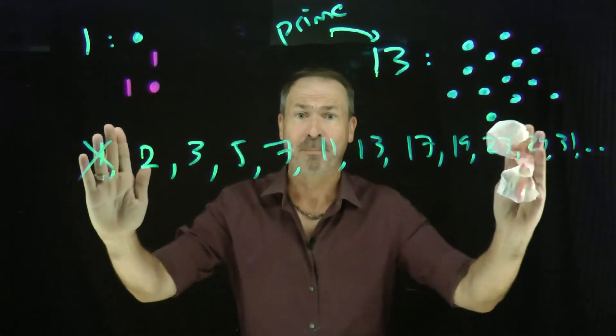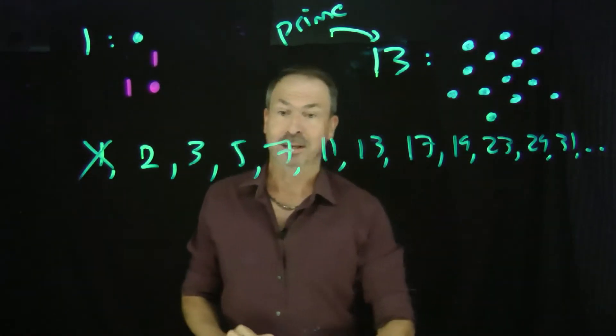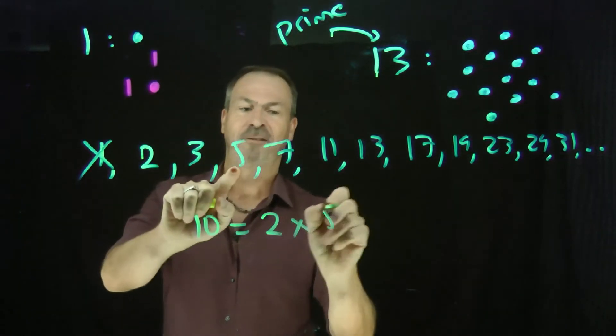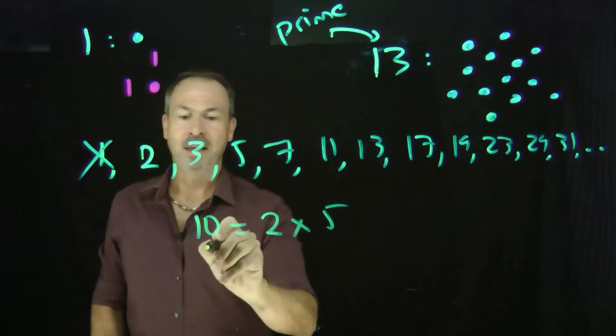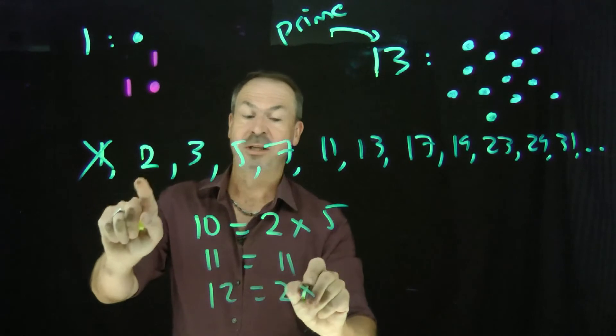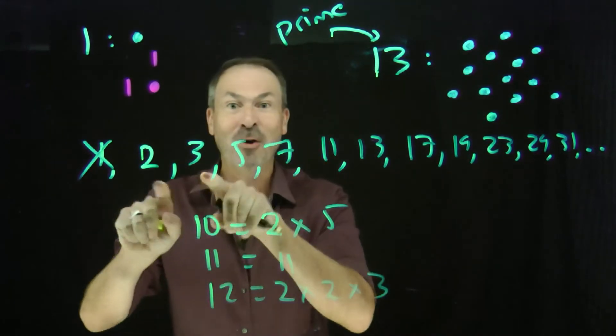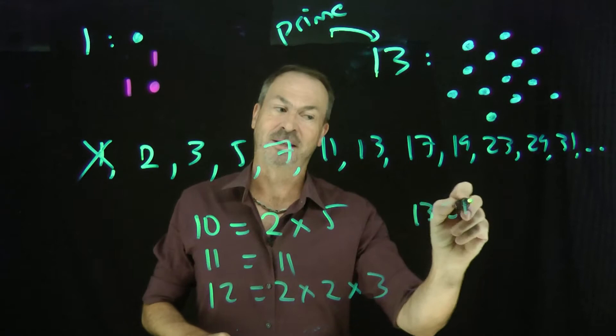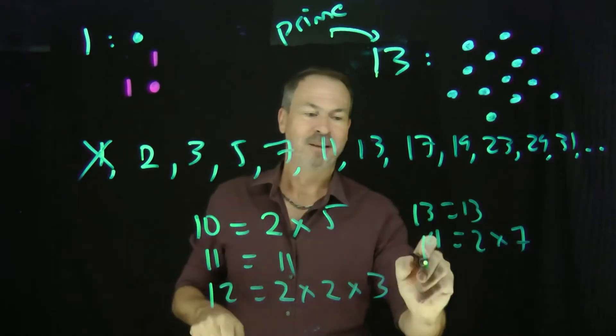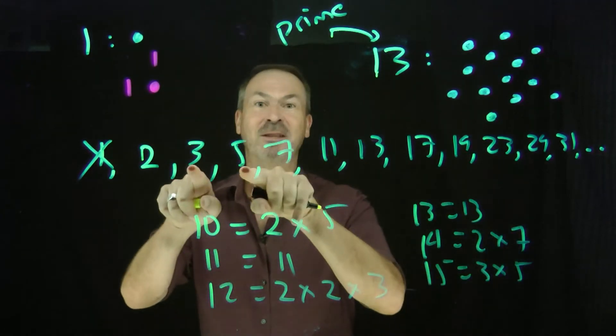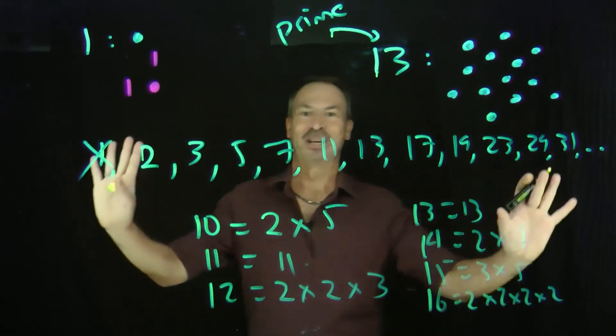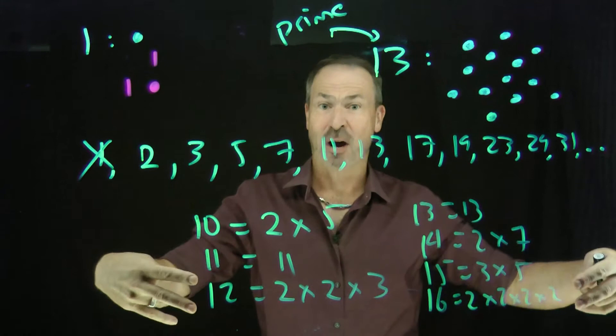Because these prime numbers are actually the building blocks of all numbers. For example, I could write 10 as a product of two primes. It's 2 times 5. These primes build the number 10. The number 11, well, is just the prime number 11. Number 12, I can think of it as 2 times another 2 times the 3. It's built off those primes. 13 is just 13, it's its own prime. 14 is built from 2 times 7, 2 times 7. 15 is built from 3 times 5, 3 times 5. 16 is built from a whole bunch of 2s, 2 times 2 times 2 times 2, and so on. Every number is built from primes.